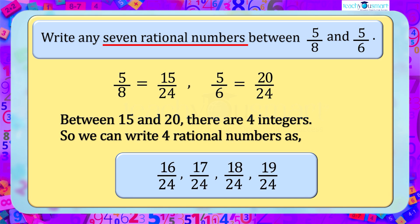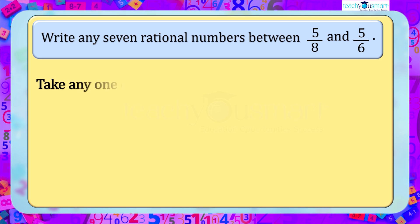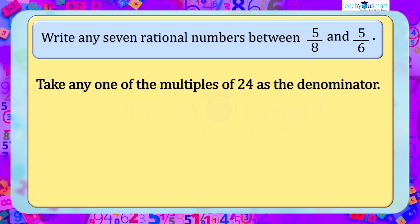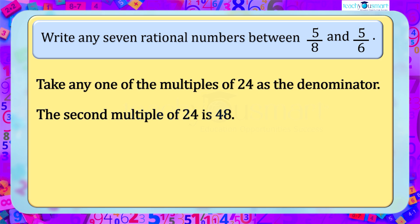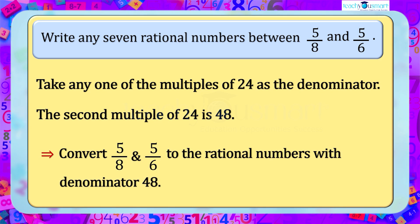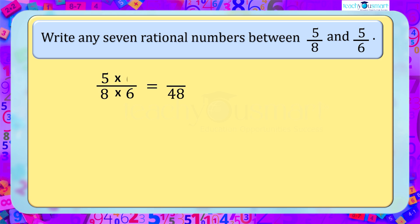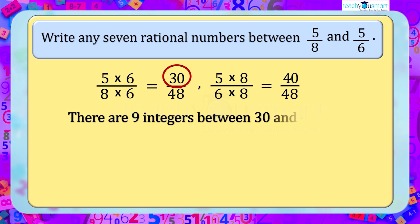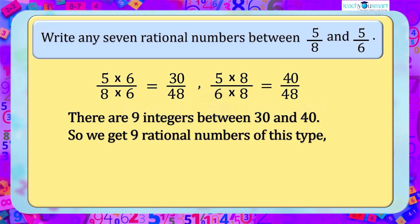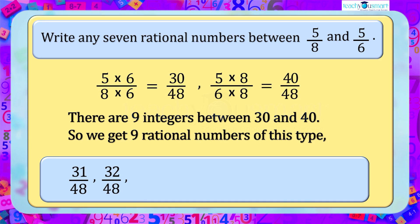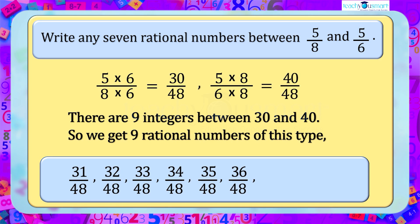But we need 7 rational numbers. In such a situation, we take a multiple of 24 as the denominator — the second multiple of 24 is 48. So we convert 5 by 8 and 5 by 6 to rational numbers with denominator 48: 5 by 8 multiplied by 6 by 6 equals 30 by 48, and 5 by 6 multiplied by 8 by 8 equals 40 by 48. There are 9 integers between 30 and 40, giving us 9 rational numbers: 31 by 48, 32 by 48, 33 by 48, 34 by 48, 35 by 48, 36 by 48, 37 by 48, 38 by 48, and 39 by 48.